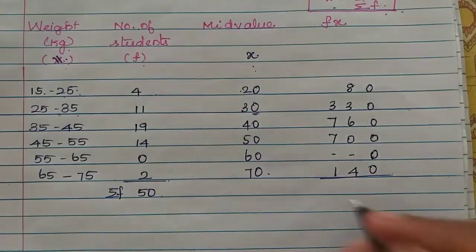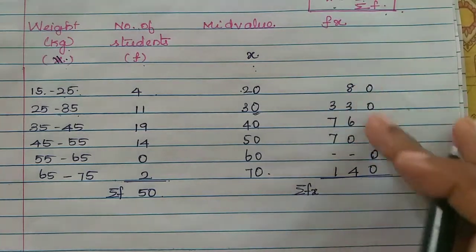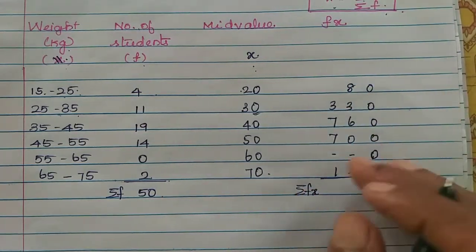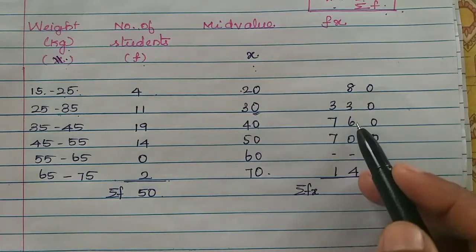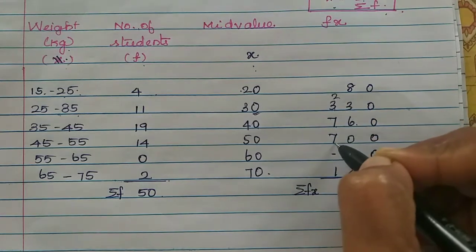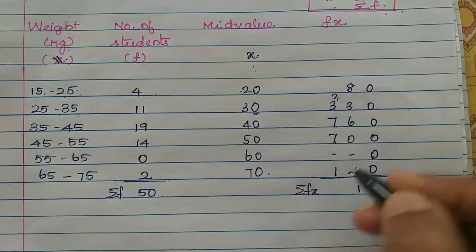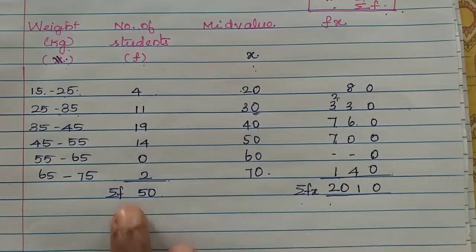We will add this all to get sigma fx. Sigma is add, so fx will add all the values. 0, 8 plus 3 is 11, 17, plus 4 is 21. 1 balance, 2 is 10, 10 plus 7 is 17, 19 is 20. So 2010. This is sigma fx and sigma f is 50.